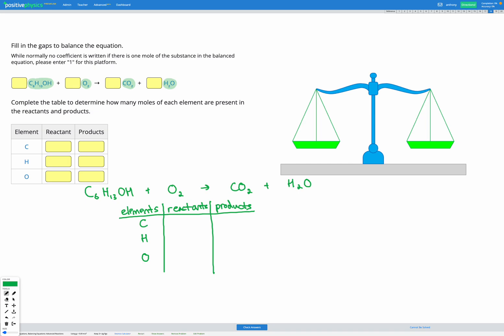Let's go ahead and count how much of each thing we have to start with. For C I have six C's here so I'm starting with six C's on the left. On the right I currently just have one C in that CO2 compound.